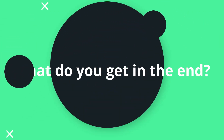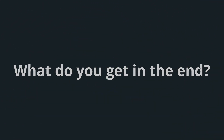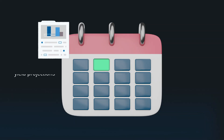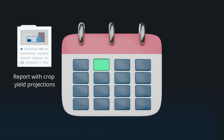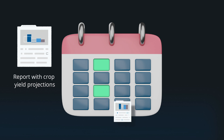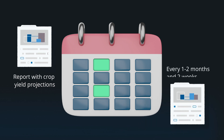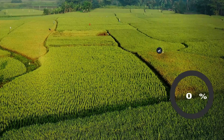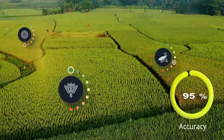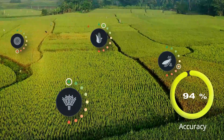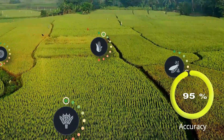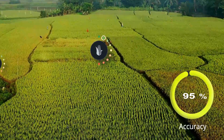The end result is a report with crop yield projections one to two months and two weeks before the harvest. Depending on your request, the accuracy of our prediction model has been tested at 95% for the selected crops.